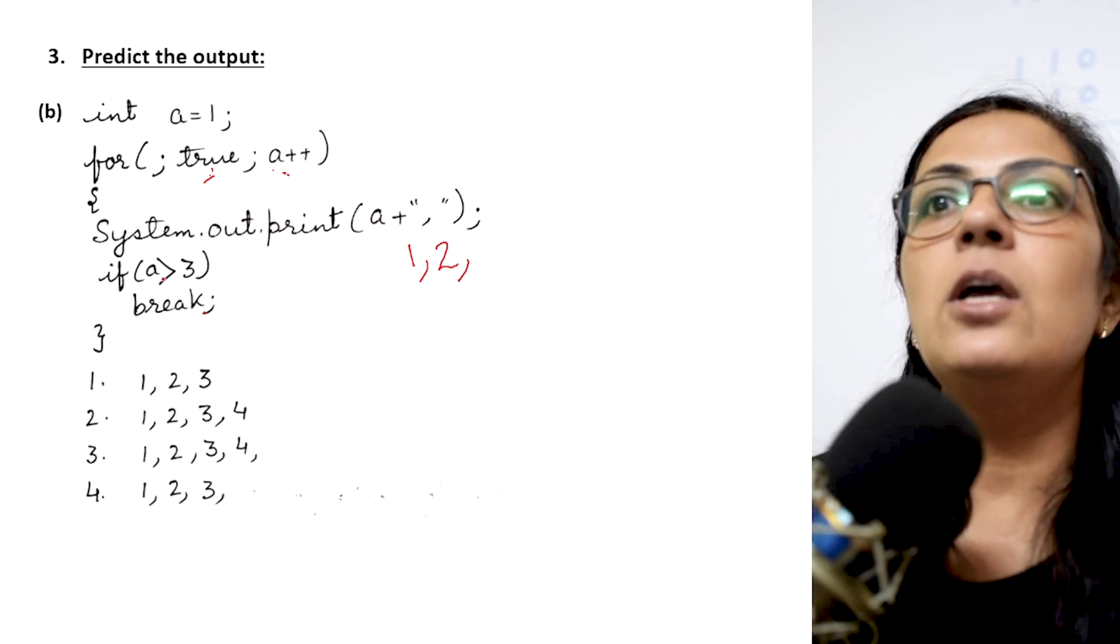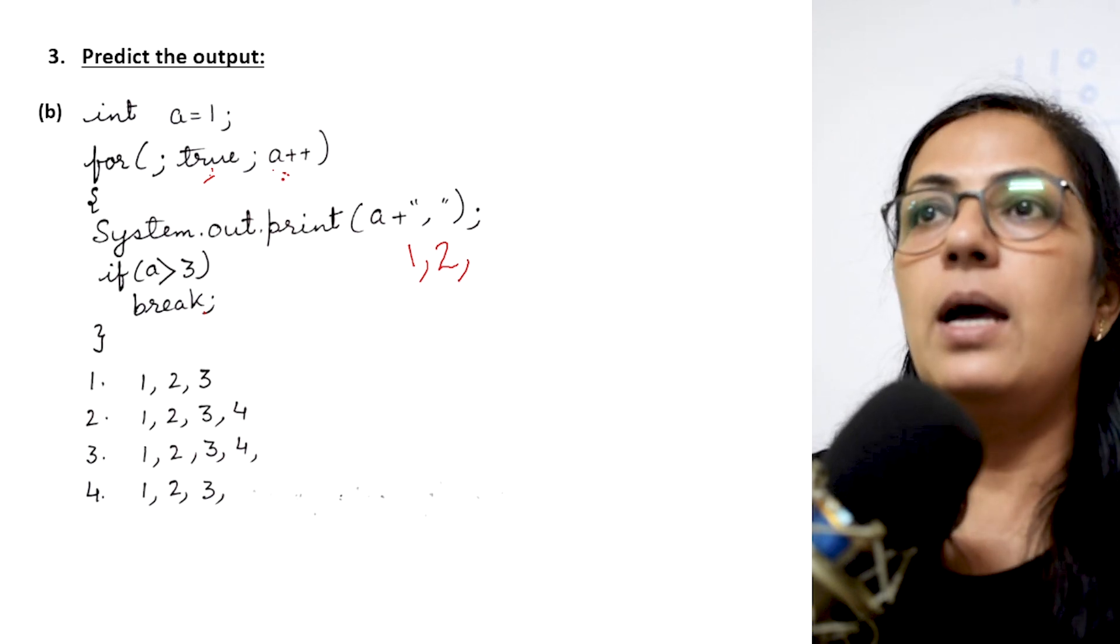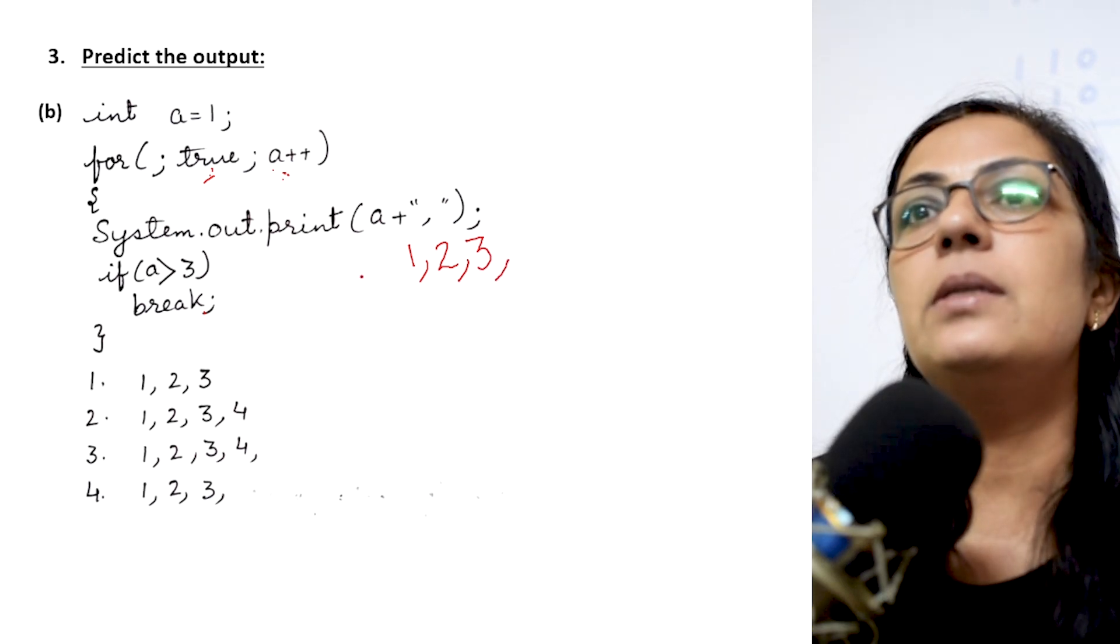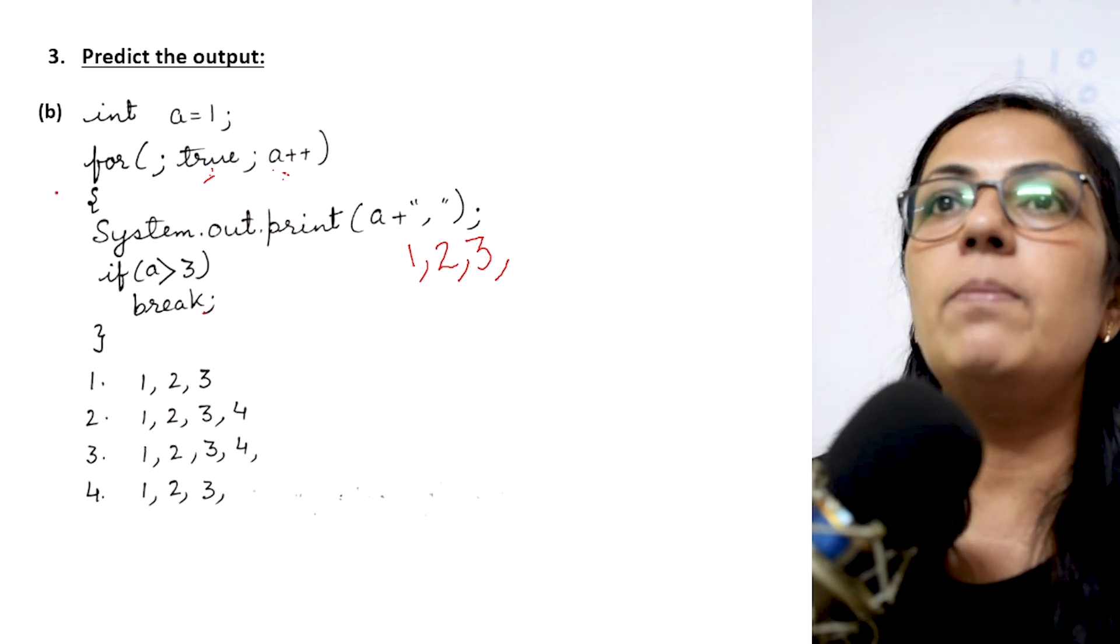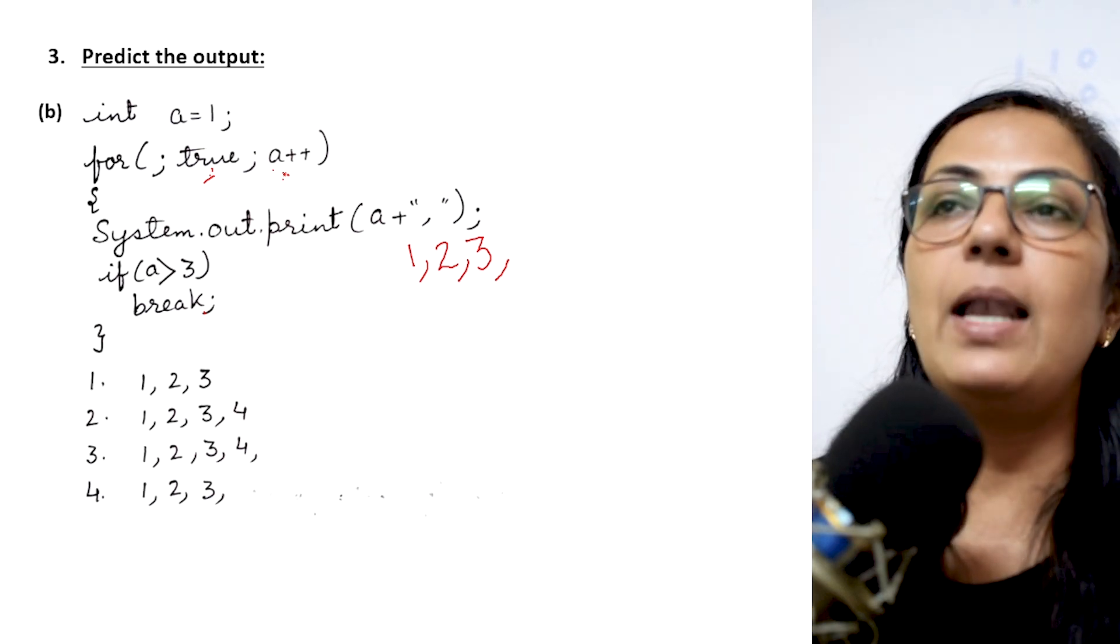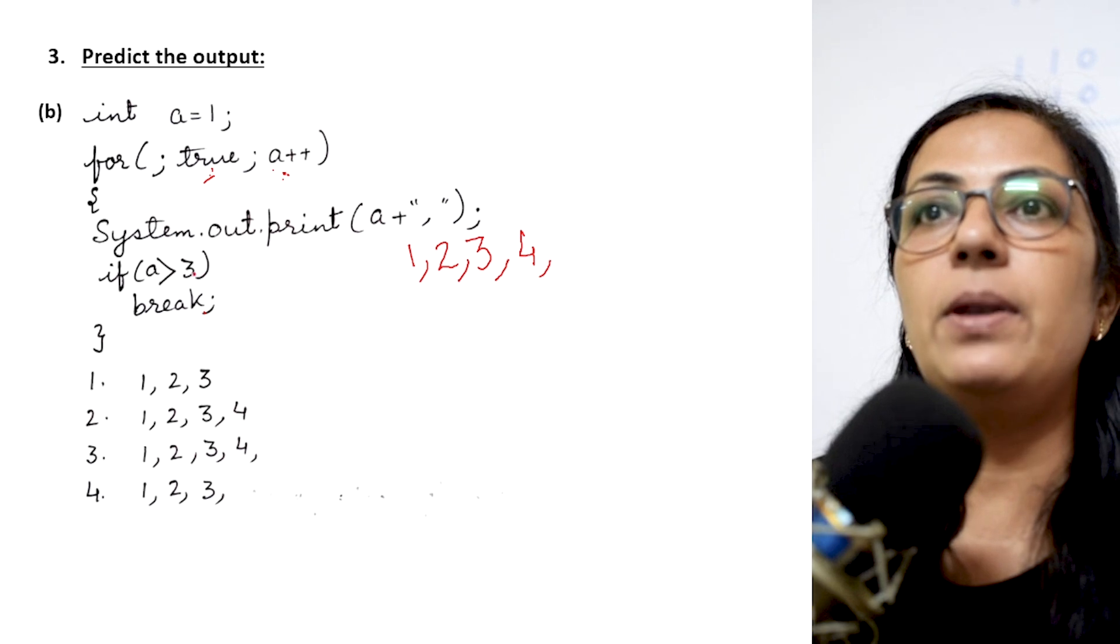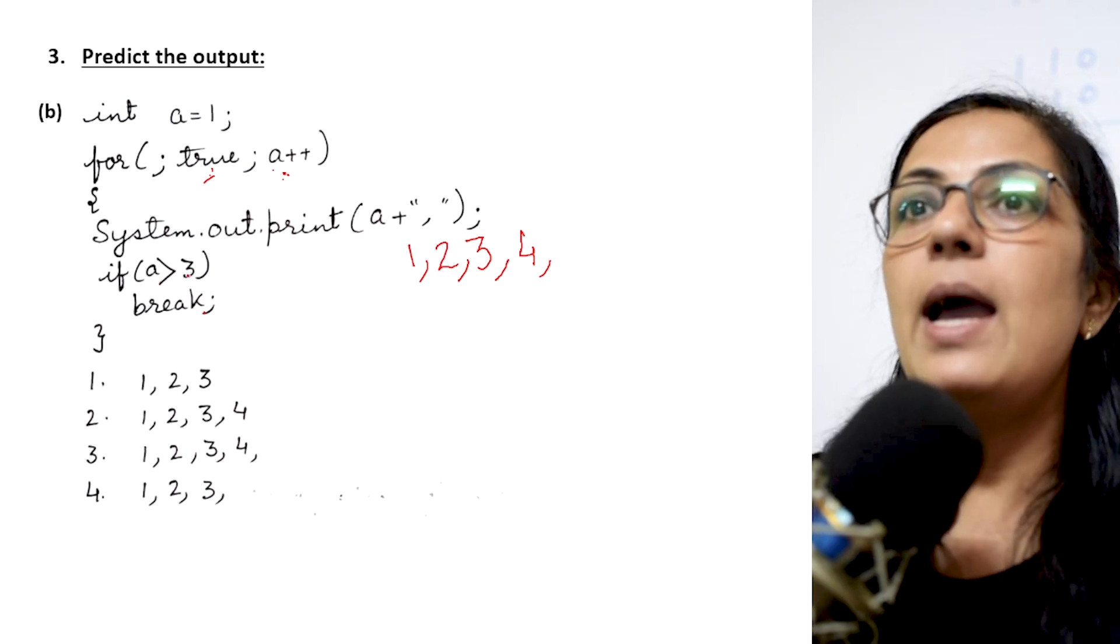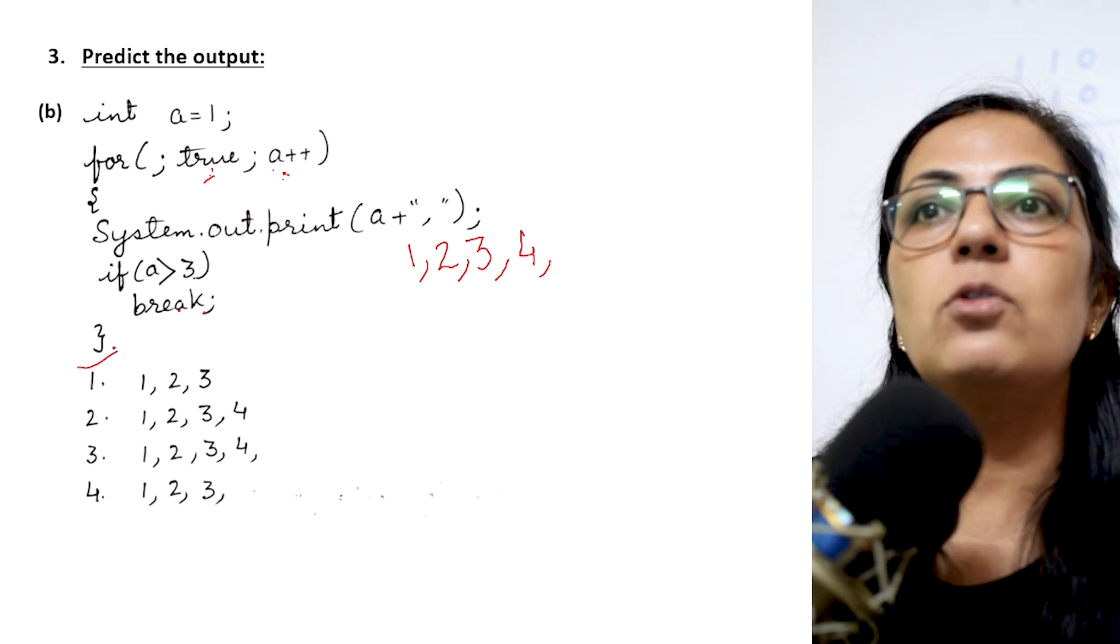Comma is there. If a greater than 3, what is the value of a? a is 1. 1 is greater than 3? No. So break statement will not be executed. The program control will be shifted to the for with the updated value. Now a will become 2. Condition is still true. After this print statement 2 will be printed. Comma will be printed. 2 is greater than 3? No. Again it will update the value of a. It will be 3. 3 will be printed. Comma will be printed. 3 is greater than 3? No. Still the condition is false. So break statement will not be executed. A plus plus will increase the value of a by 1. So the value of a will become 4 and comma will be printed. And if a is greater than 3? Yes. The value of a is now 4 and it is greater than 3? Yes.